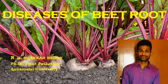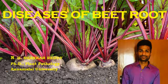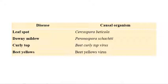This is beetroot. Now we will see the list of important diseases in beetroot. My name is Jenna Shankar Reddy and I am doing a PhD in plant pathology at Annamalai University. The important diseases in beetroot are: leaf spot, caused by Cercospora beticola; downy mildew, caused by Peronospora schachtii; beet curly top, a viral disease caused by beet curly top virus; and beet yellows, also a viral disease caused by beet yellows virus.